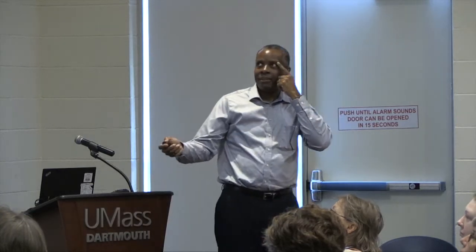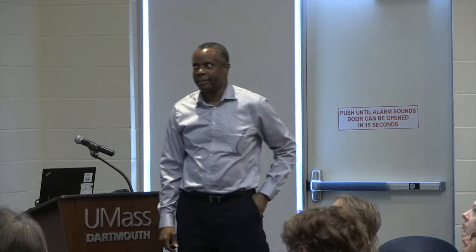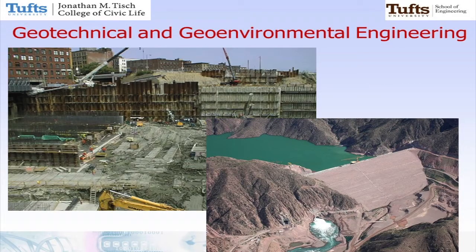Civil engineering is a lot more than bridges. We do things like hazard mapping — looking at what would happen if an earthquake occurs — sensor networks, biomechanics. Going back to the four areas: geotechnical, often combined with geo-environmental. Geotechnical engineering is basically anything beneath the ground surface. Geo-environmental means anything environmentally concerning underneath the ground surface. A classic geotechnical problem is estimating the foundation space for a new building — getting down to where you can have underground parking. That's geotechnical engineering working through that process.